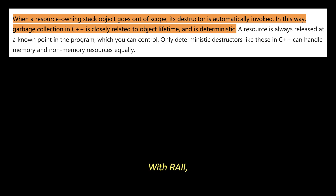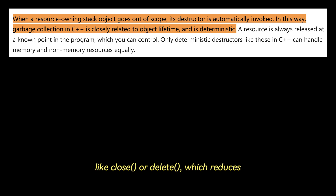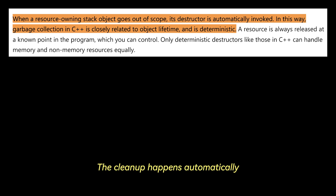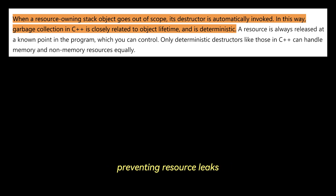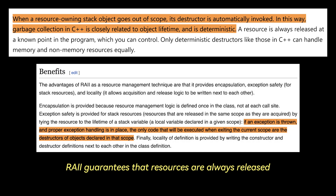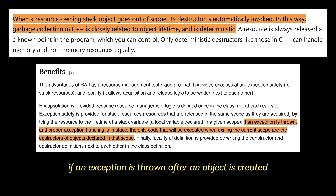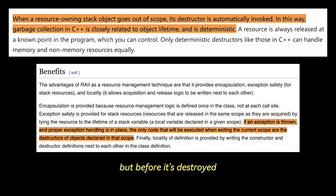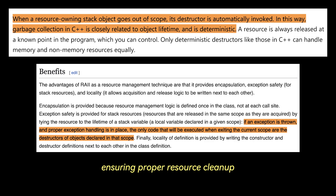So why is RAII important? With RAII, there's no need to explicitly call functions like close or delete, which reduces the risk of forgetting to release resources. The cleanup happens automatically when the object's lifetime ends, preventing resource leaks. RAII also guarantees that resources are always released even if an exception occurs. For example, if an exception is thrown after an object is created but before it's destroyed, the object's destructor will still run, ensuring proper resource cleanup.